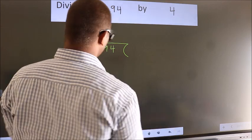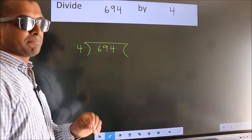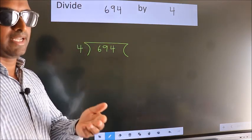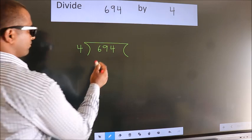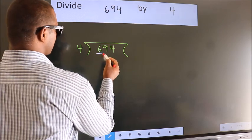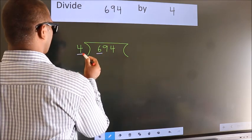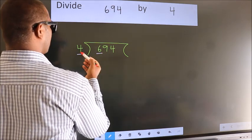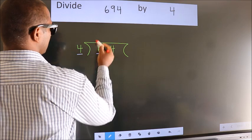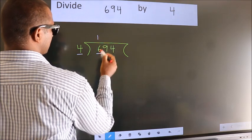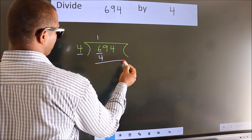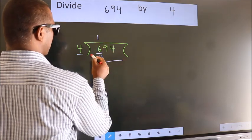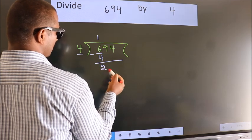This is your step 1. Here we have 6, here 4. A number close to 6 in the 4 times table is 4 ones 4. Now we should subtract, we get 2.